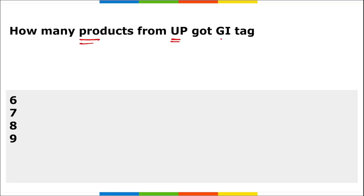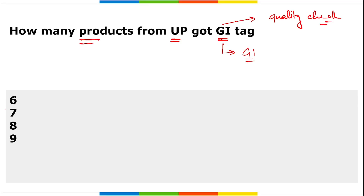Next, how many products from UP got the GI tag? The GI tag, or Geographical Indication tag, states whether a product of a particular country or place is genuine — it is a quality check for a particular product. A total of seven products from Uttar Pradesh recently got the GI tag.